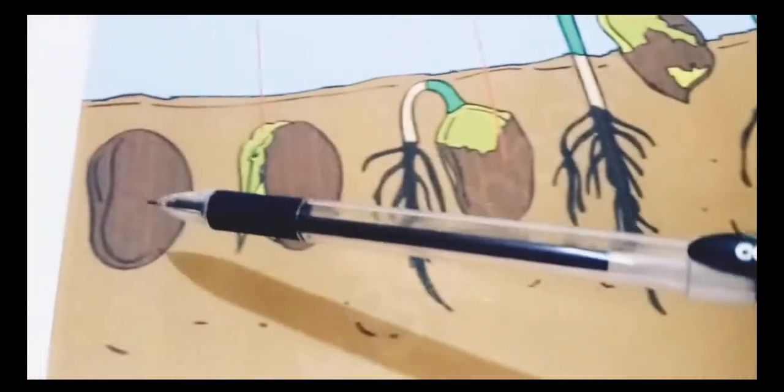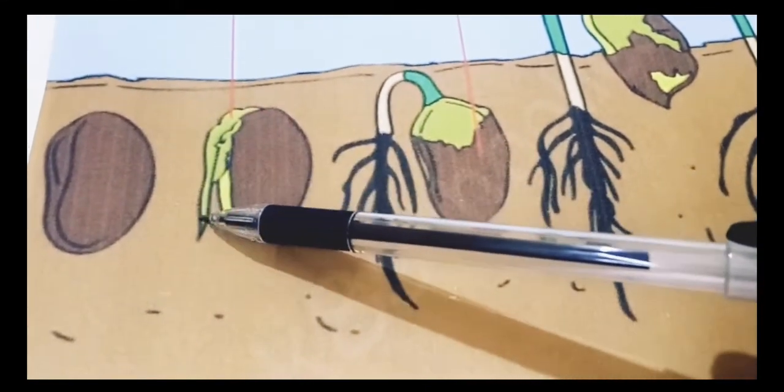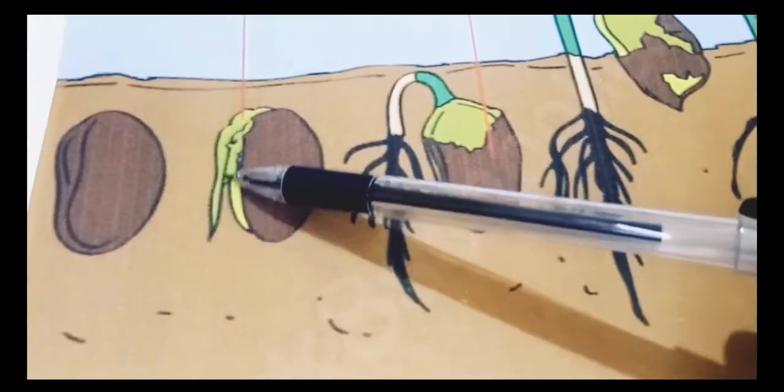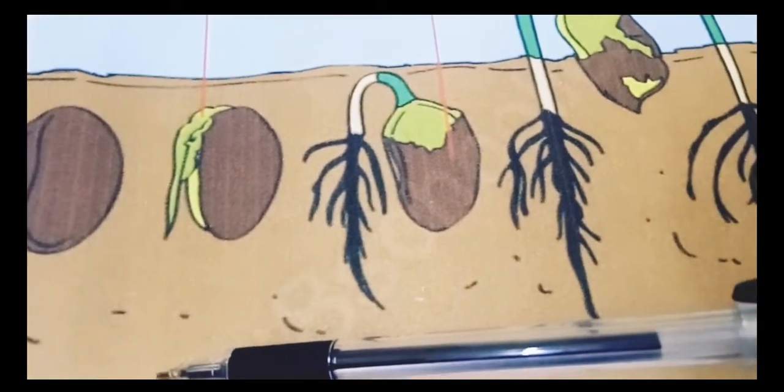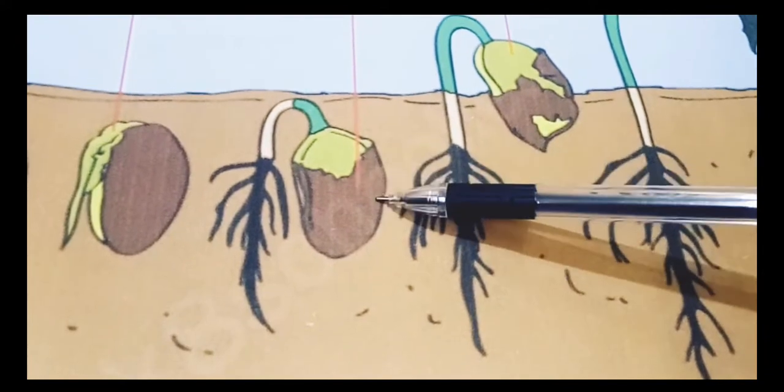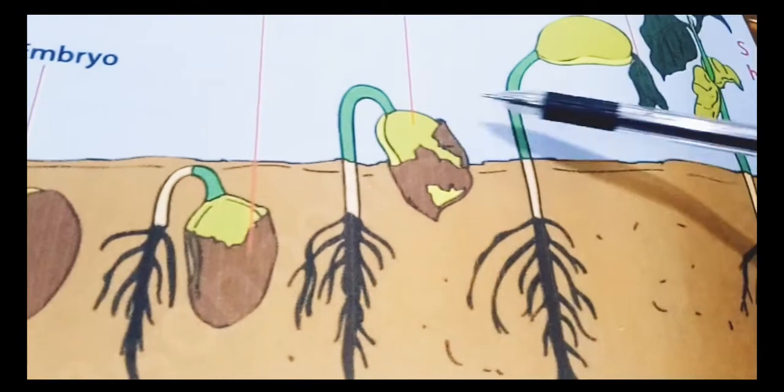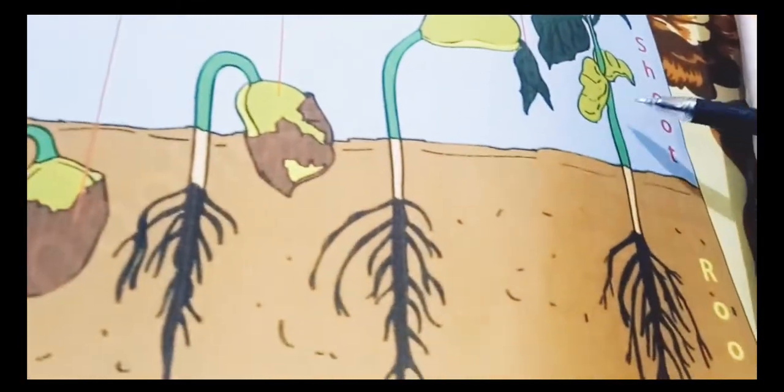When you grow a seed into the soil, what will happen? Slowly slowly the roots, they are coming and they are going downwards towards the gravity. And then gradually what will happen? The seed coat, it breaks and this cotyledon goes up and it's converted into leaves, that is shoot.